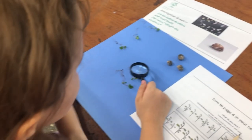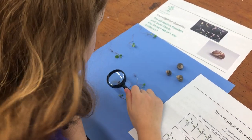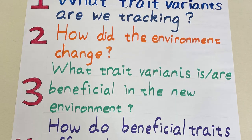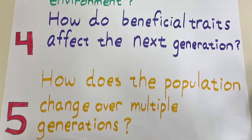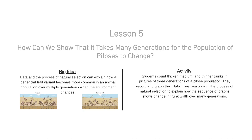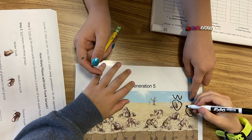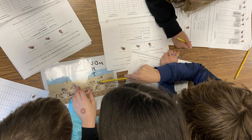They investigate populations of organisms by observing individuals closely and documenting variation. They measure and represent the distribution of trait variants. They follow the fate of a storybook population of Pelosis after it's subjected to a dramatic environmental change, then represent changes over time in the distribution of trait variants in the population as a result.